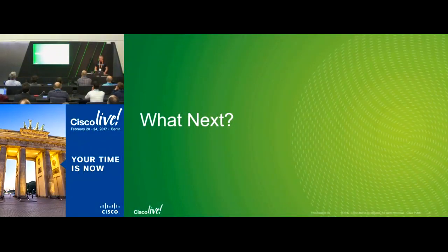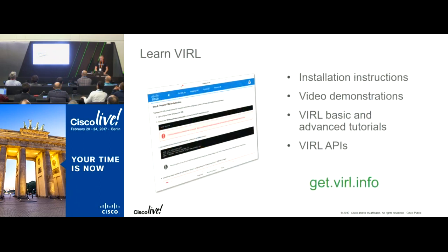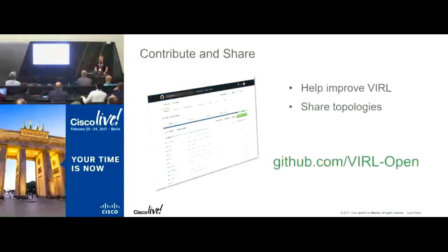We hear about new VIRL use cases all the time. To get VIRL, go to virl.cisco.com to get information about purchasing. To learn VIRL, go to getvirl.info, which points to the installation and documentation site with tutorials on installing on top of ESXi or a host-based hypervisor like Fusion. We also have a rich learning community at learning.network.cisco.com, and a GitHub site where people can share topologies and make suggestions on how to improve VIRL.